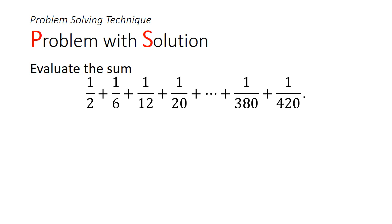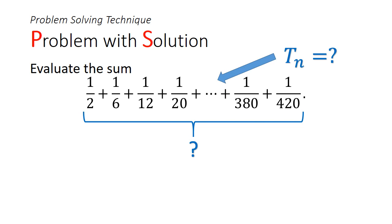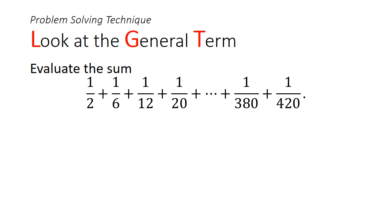Before moving on, we need to recognise two shortcomings of this pattern-finding approach. First, if you don't know the general term, you can't determine the total number of terms unless the question gives it directly. Second, for a more complicated question, finding a pattern may not be possible. So we need a more reliable method.